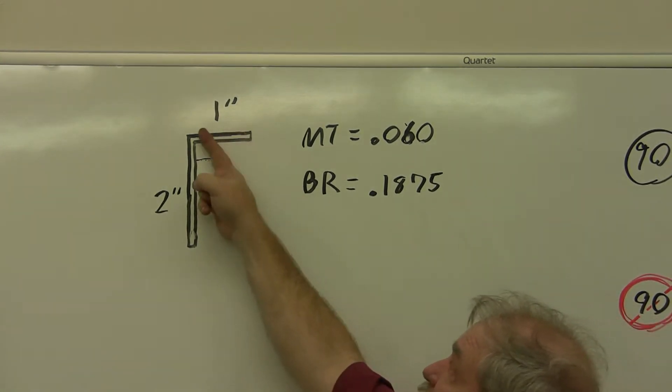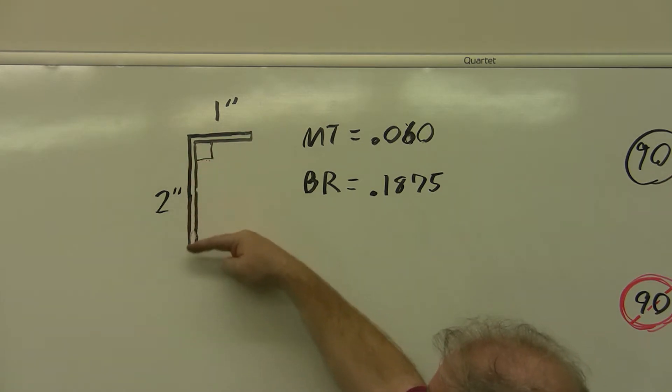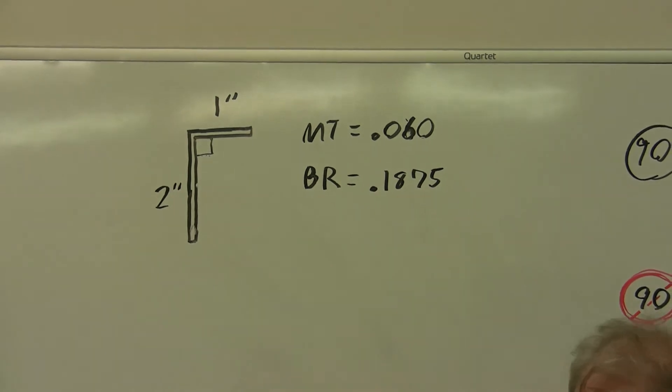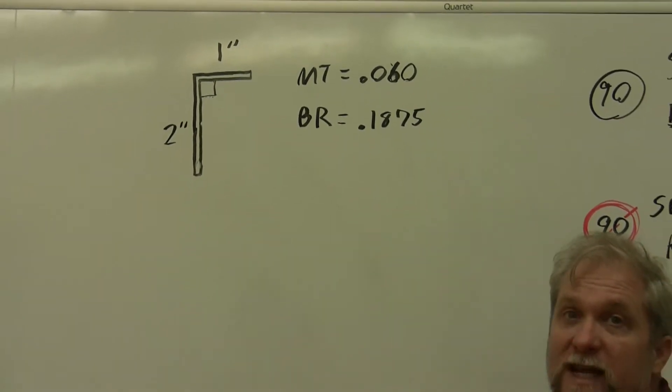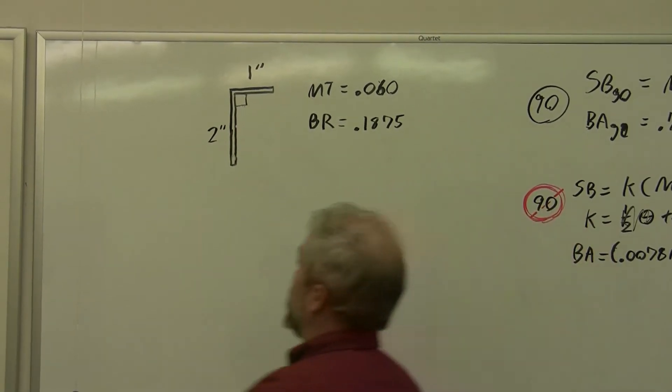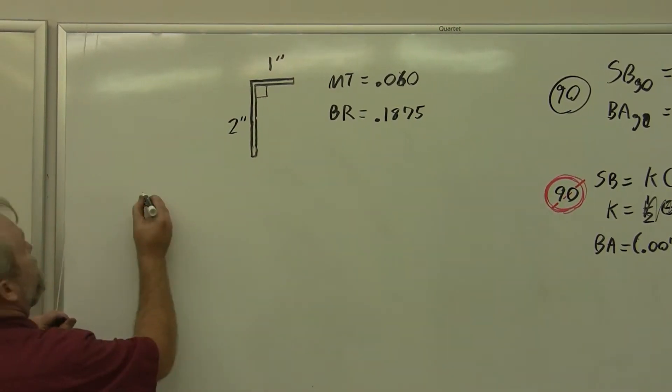We have a 1 inch flat coming across and a 2 inch flat going away. This is going to be like a little angle that would hold something up, like a structural angle, and we need to lay this out. Now, use paper and pencil. It's easier to keep track of things if you've got paper and pencil.